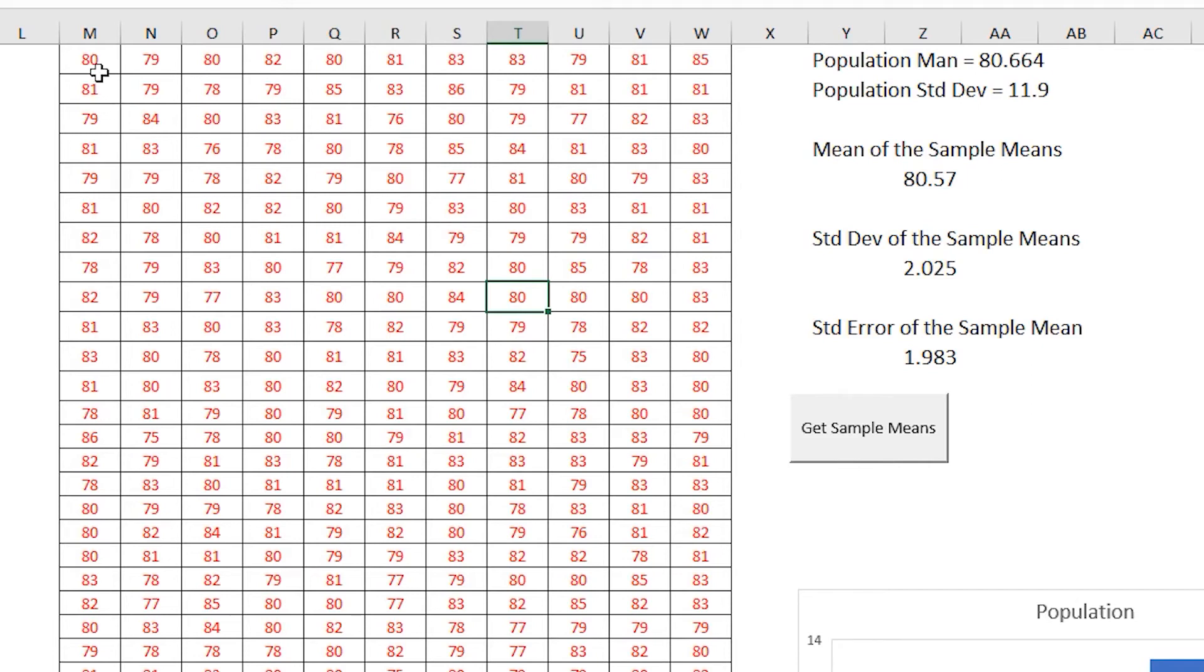Look at the numbers here. Look at these numbers: 80, 79, 80, 82, 80, 81, 83, 83, 79, 81, 77, right? These numbers are very close to the population mean, which means the standard deviation of the sample means has gone down and standard error which represents this one is also 1.983.